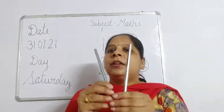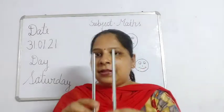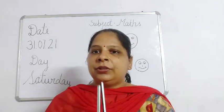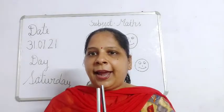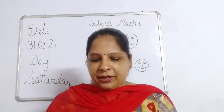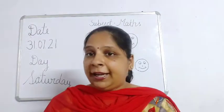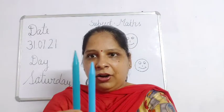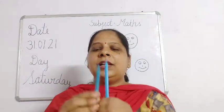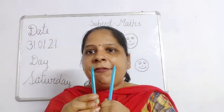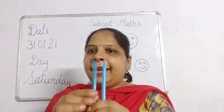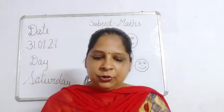So children, I have these pencils. 1, 2. How many pencils do I have? 1, 2. I have 2 pencils. After that, I have these crayons. How many crayons do I have? 1, 2. I have 2 crayons.